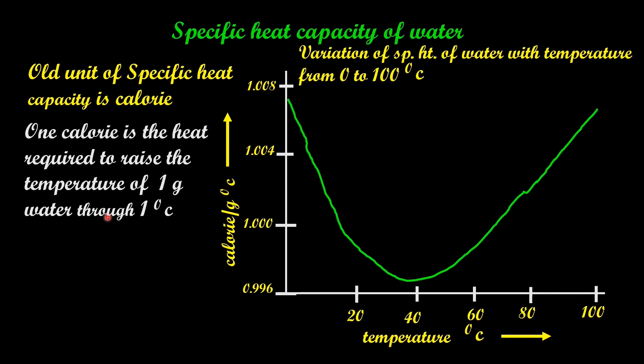Because of this variation of specific heat capacity of water with temperature, the definition for specific heat capacity of water had to include the temperature range also. The temperature range for which the specific heat capacity of water is equal to 1 is included in the definition.